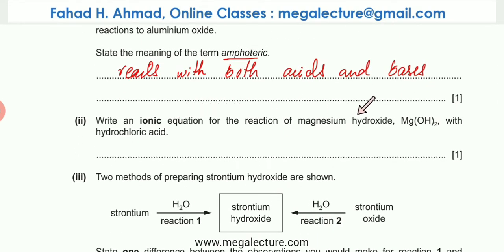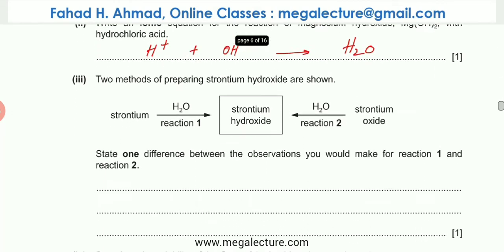You're being asked to write an ionic equation for the reaction between magnesium hydroxide with hydrochloric acid. Whenever you are asked to write an ionic equation, the acid produces H+ ion, the base produces OH- ion and they react to produce a water molecule. That's your ionic equation for this reaction.